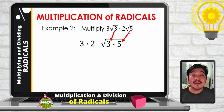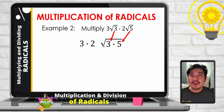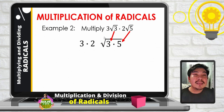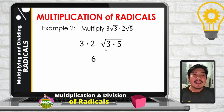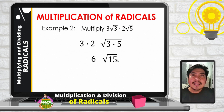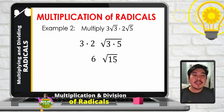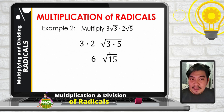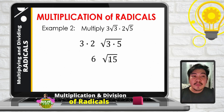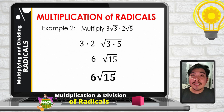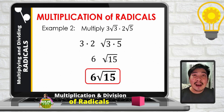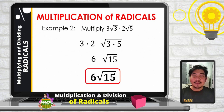We now have the square root of 3 times 5. Simplifying further, 3 times 2 is 6. Then square root of 3 times 5 is simply square root of 15. Since 15 is not a perfect square, we have 6 times square root of 15, which gives us 6 square root of 15 as our final answer.